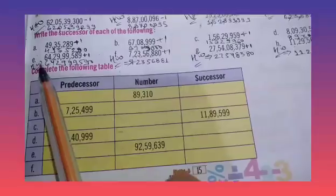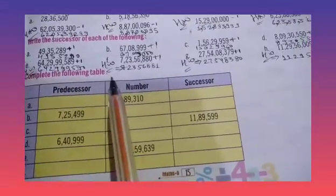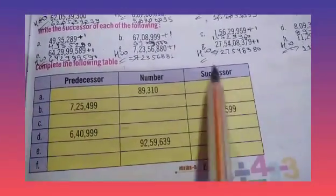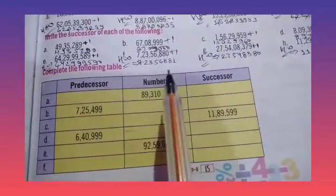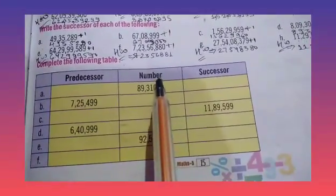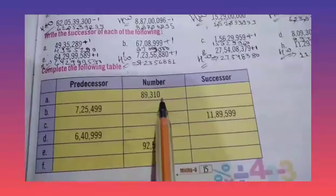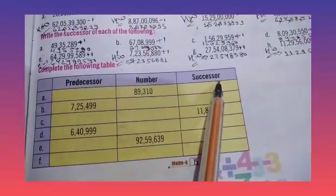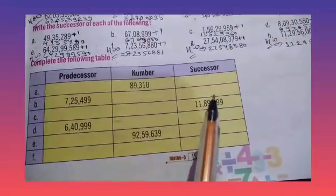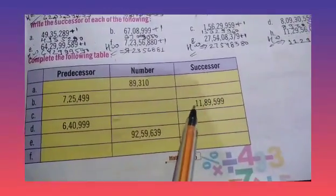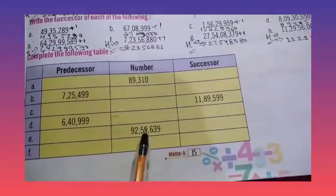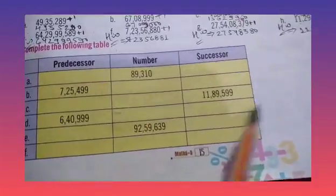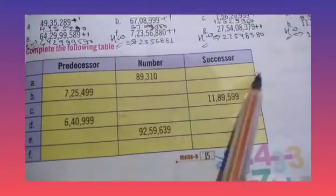So we have to complete the following table. The table is given here; some numbers are given and we have to tell the successor and predecessor. We have to find both and complete the chart.